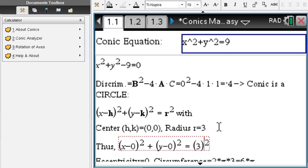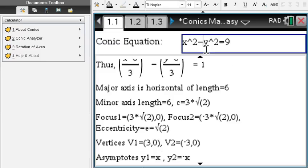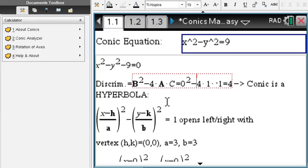In our particular example, the center is (0,0), radius is 3. So therefore we have this circle equation, and we also give you more information, which is the eccentricity, the circumference, and the area of the conic in question here.